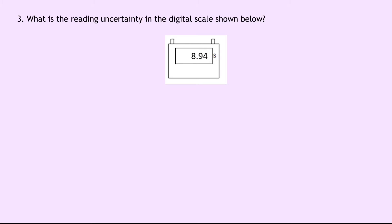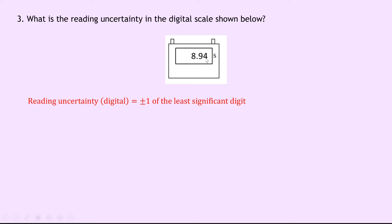Moving on to question three — digital scales. What is the reading uncertainty in the digital scale shown below? We've got 8.94 seconds, and we need to remember the rule: the reading uncertainty in a digital scale is equal to plus or minus one of the least significant digit. The four represents where our least significant digit is, but the actual number doesn't matter — it's just the smallest value that digit can take, which is one. So our uncertainty is plus or minus 0.01 seconds.